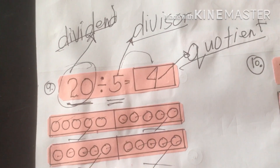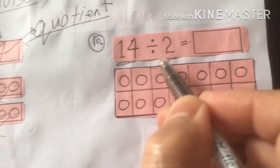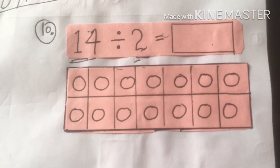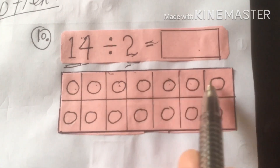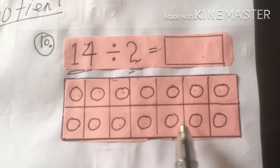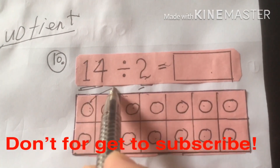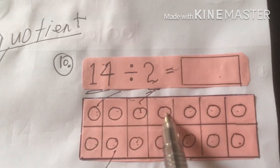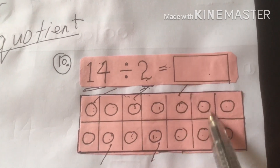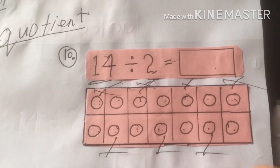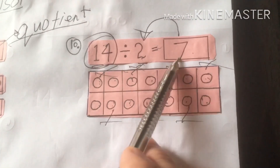One more: 14 divided by 2. 14 is the dividend, 2 is the divisor. Draw 14 beads: 1, 2, 3, 4, 5, 6, 7, 8, 9, 10, 11, 12, 13, 14. Group by 2: 1–2 (mark), repeat seven times. Count: 1, 2, 3, 4, 5, 6, 7. The quotient is 7. Multiply: 7 times 2 equals 14. Divide: 14 divided by 2 equals 7.